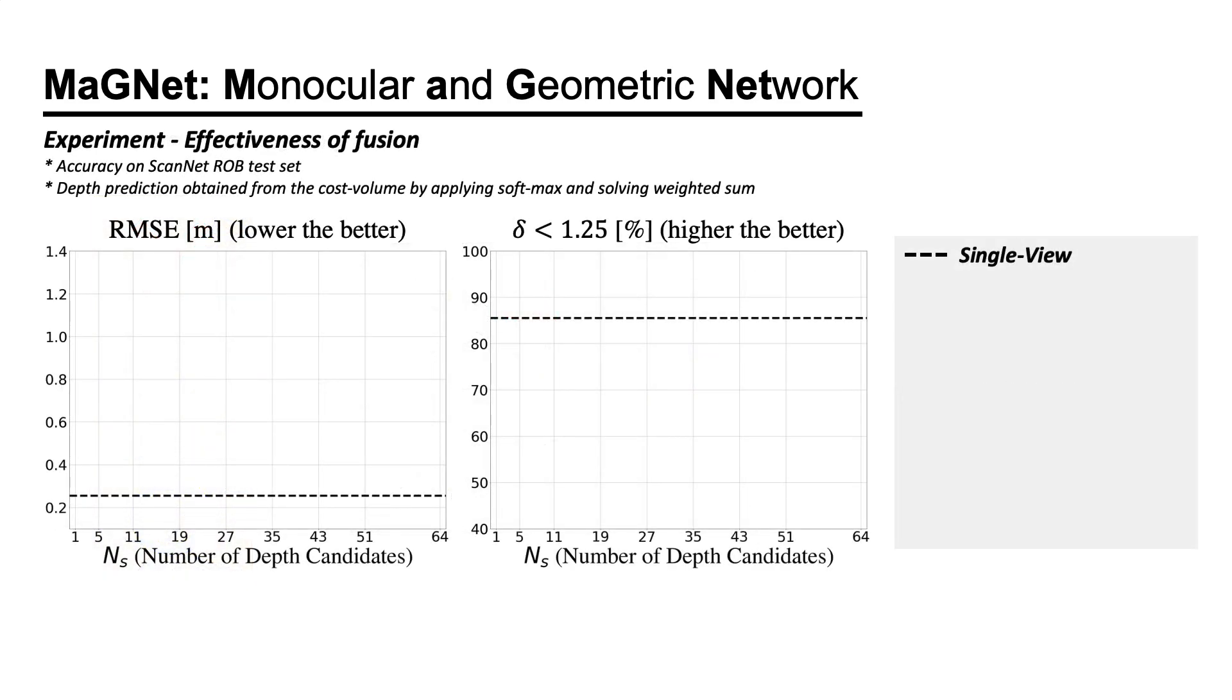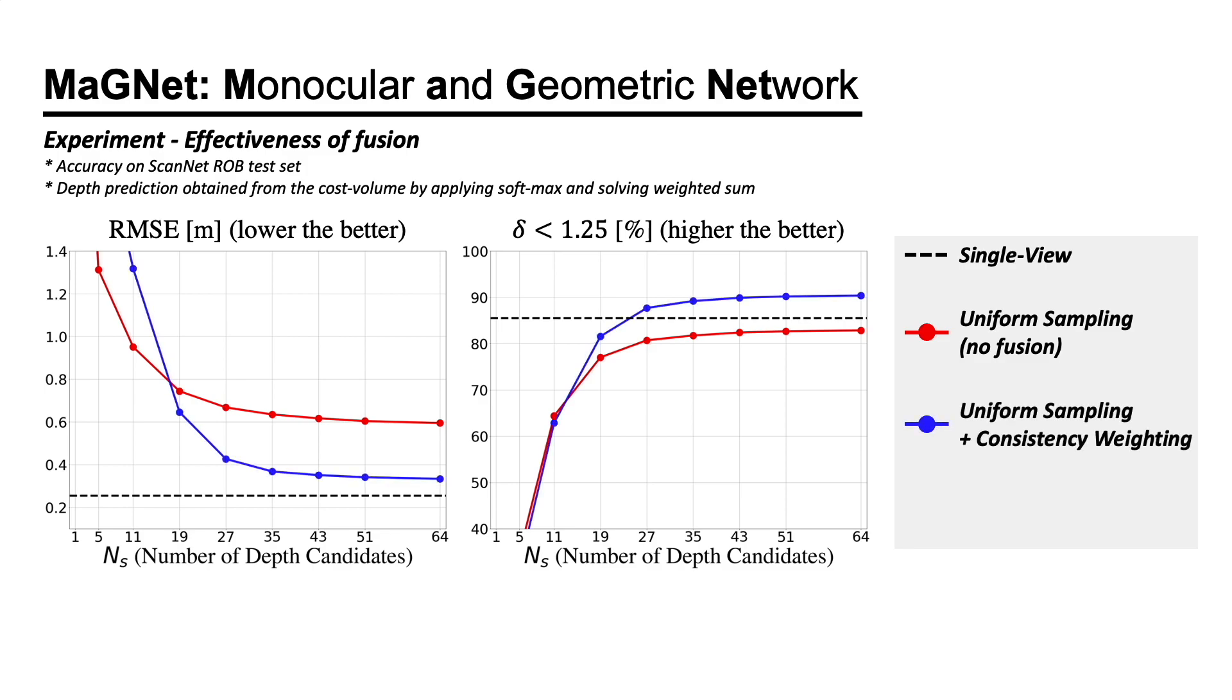Here is an ablation study demonstrating the effectiveness of fusing the single-view depth probability with multi-view geometry. Without the fusion, the accuracy is worse than the single-view predictions, even when a large number of depth candidates are evaluated. With the help of depth consistency weighting and probabilistic depth sampling, the network can achieve higher accuracy while evaluating fewer depth candidates.